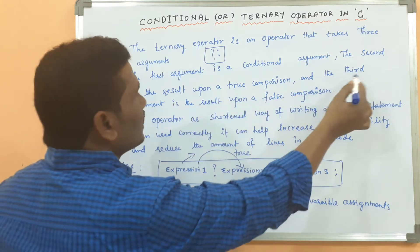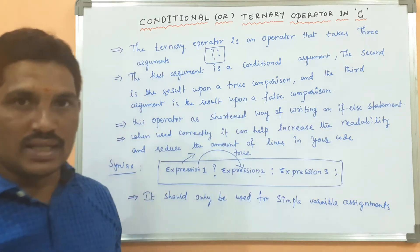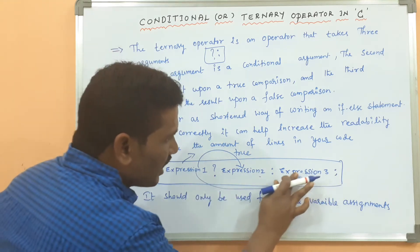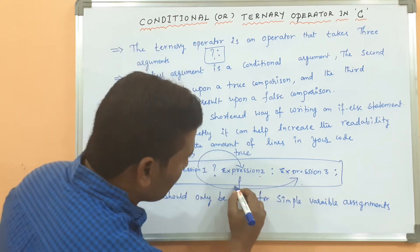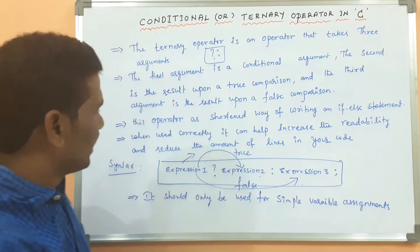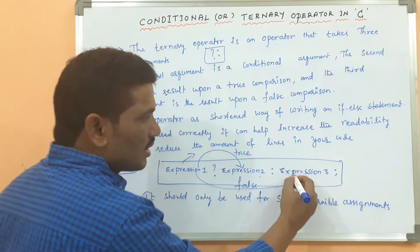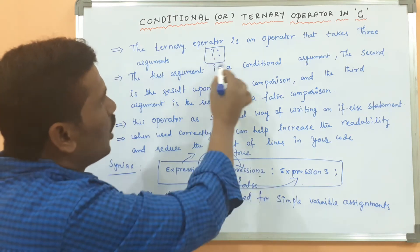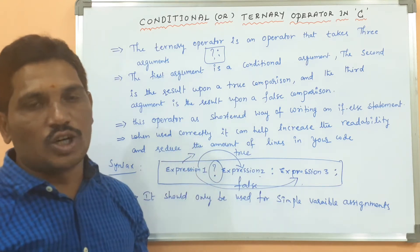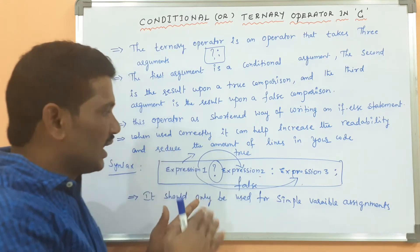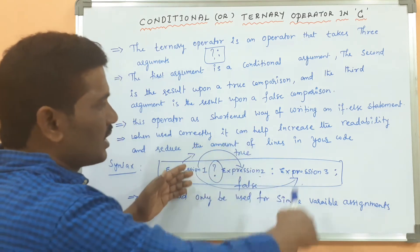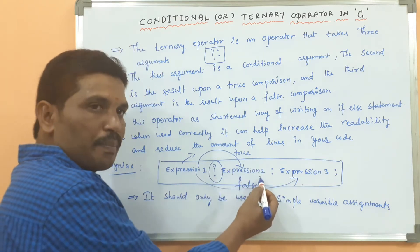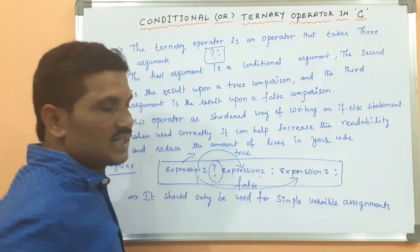The third argument is the result of a false comparison. Whenever expression 1 returns false, expression 3 will be executed. The two operators involved in the conditional operator are the question mark and the colon. So: expression 1, question mark, expression 2, colon, expression 3. If true, expression 2 executes; if false, expression 3 executes.